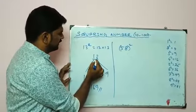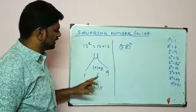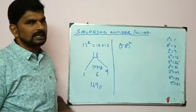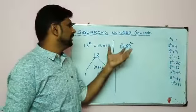1 into 3 into 2. So 1 threes are 3, 3 twos are 6. So 169 is the answer. Next I'll take another example: 58 square.